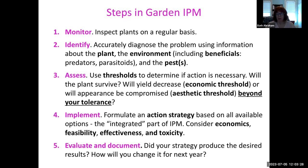You have to know what pests you're dealing with, and there's help for you through the Extension Office as well as other master gardeners. Step three is very important: you have to figure out what you are willing to admit into your garden. Does seeing one Japanese beetle throw you into a tizzy, or do you have to really see some damage on your roses before you want to do anything? You have to set your specific tolerances, whether aesthetic or economic.